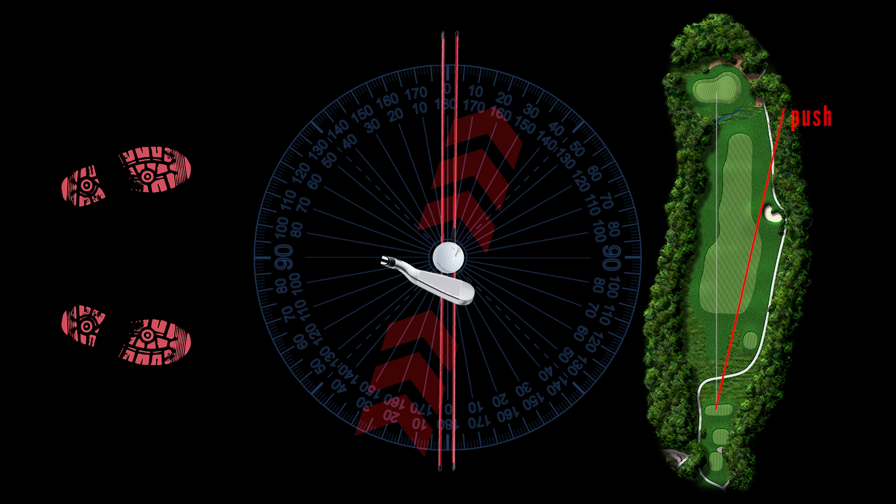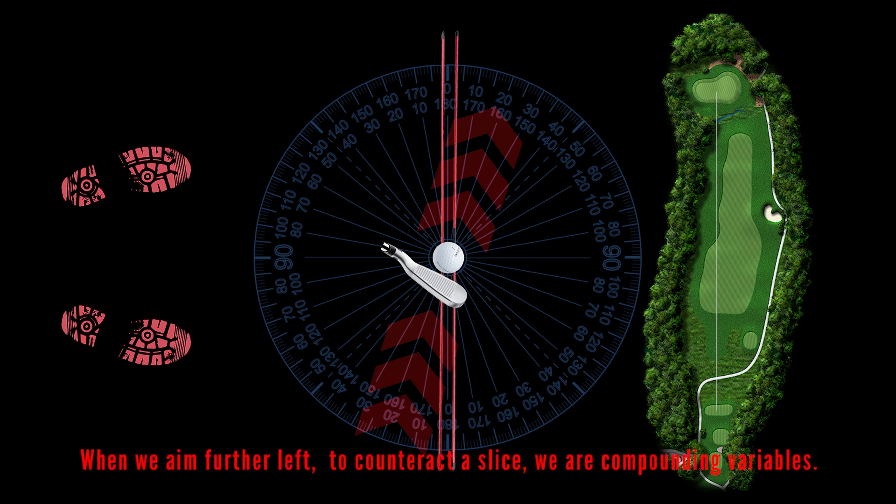This is a push. If the club opens even further, say seven degrees open, it will start five degrees right club path and cut even further. This is a blocked out slice. This is where dead swings go to die. No offset club, no grip change is likely to help once you start compounding your swing variables.